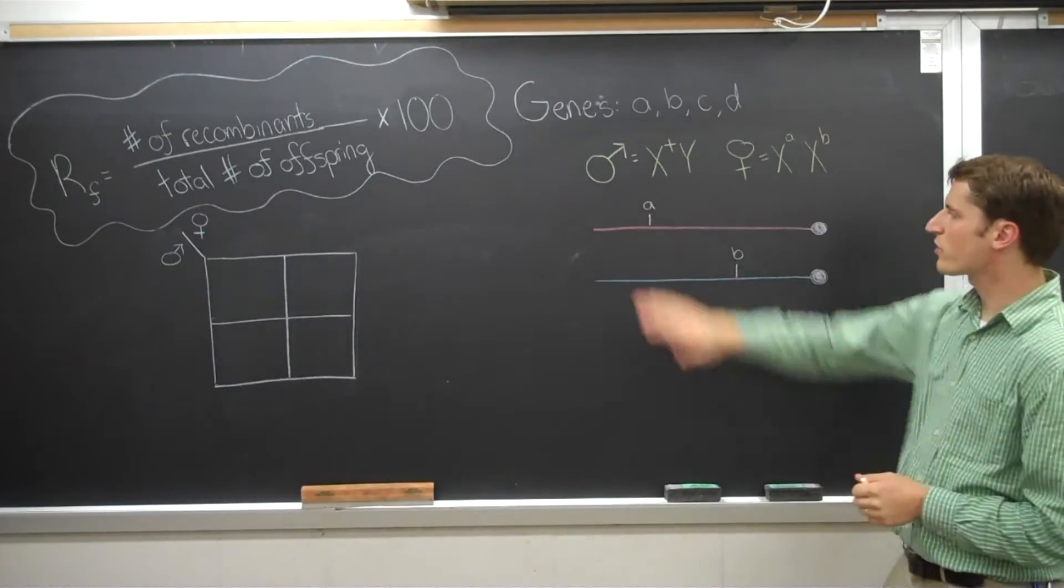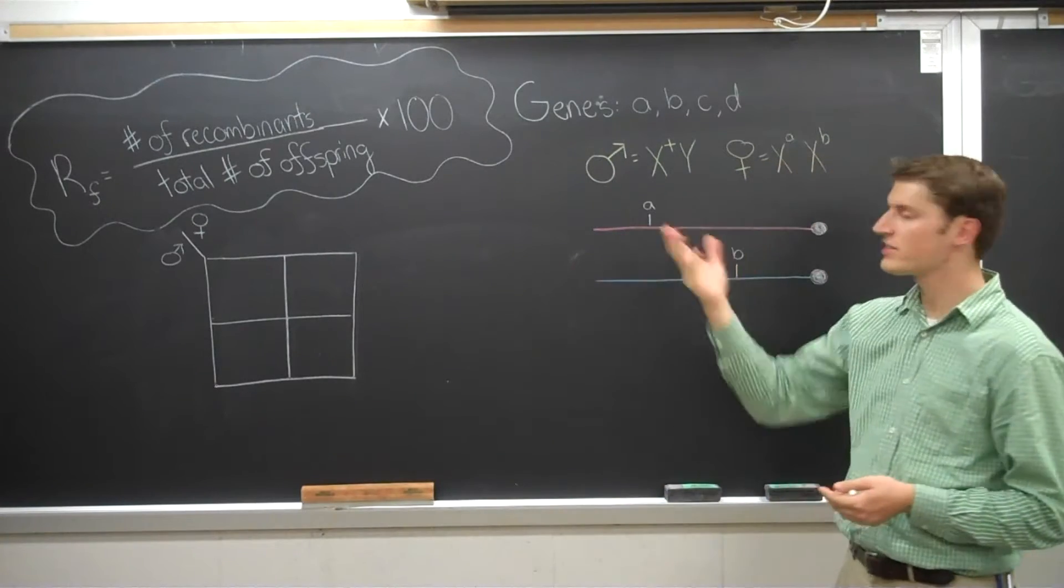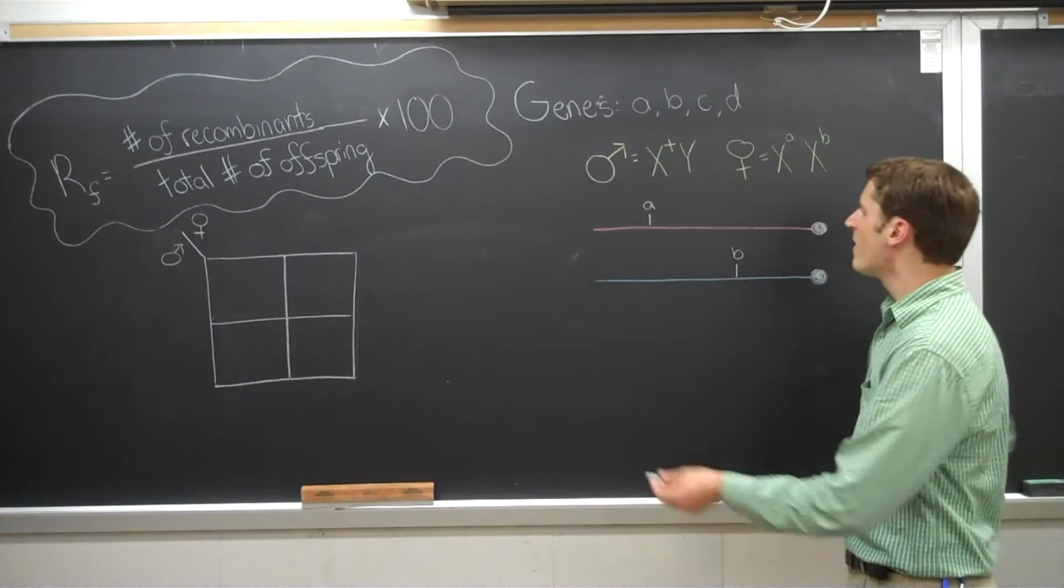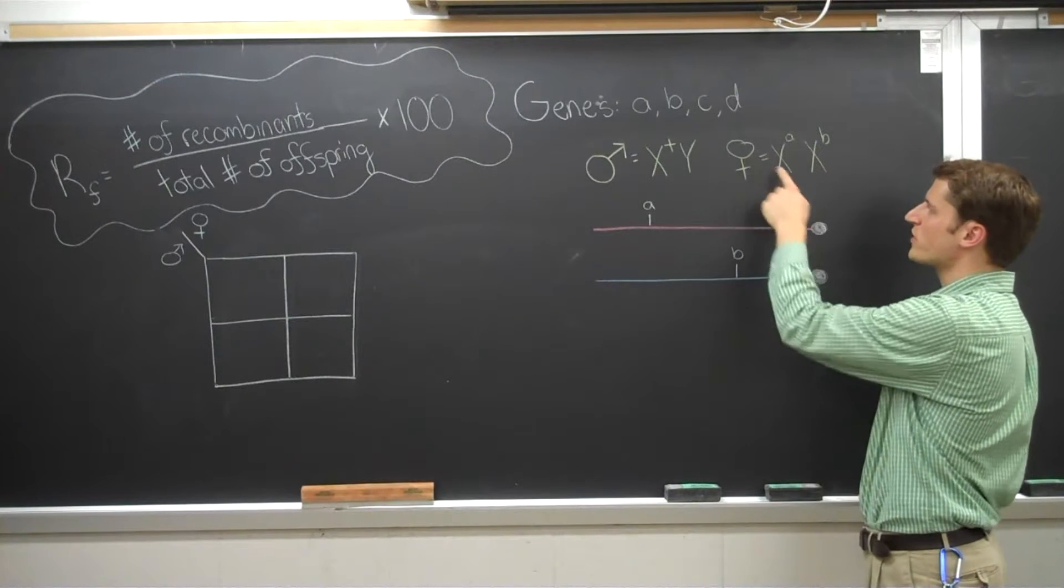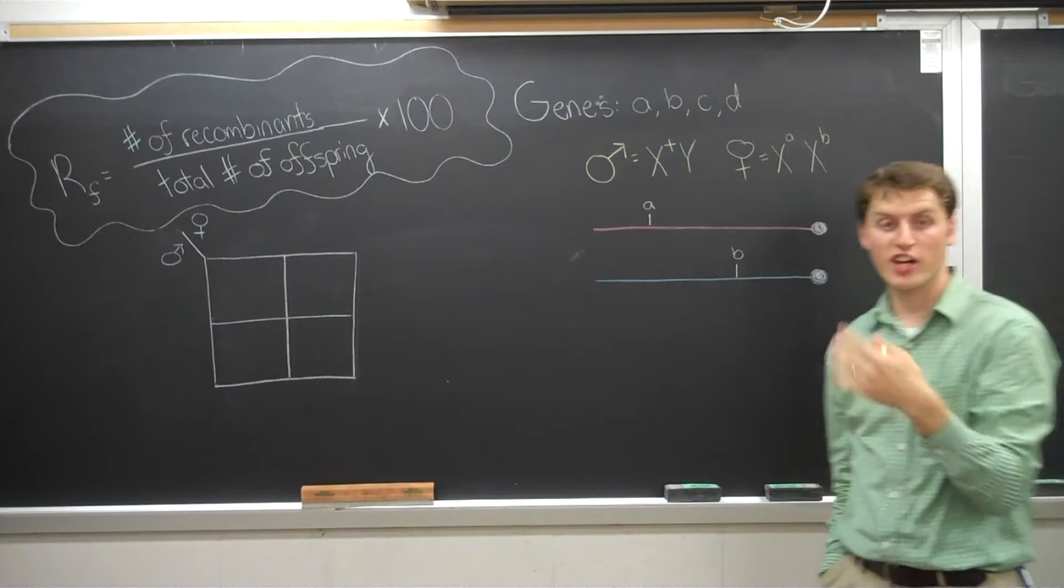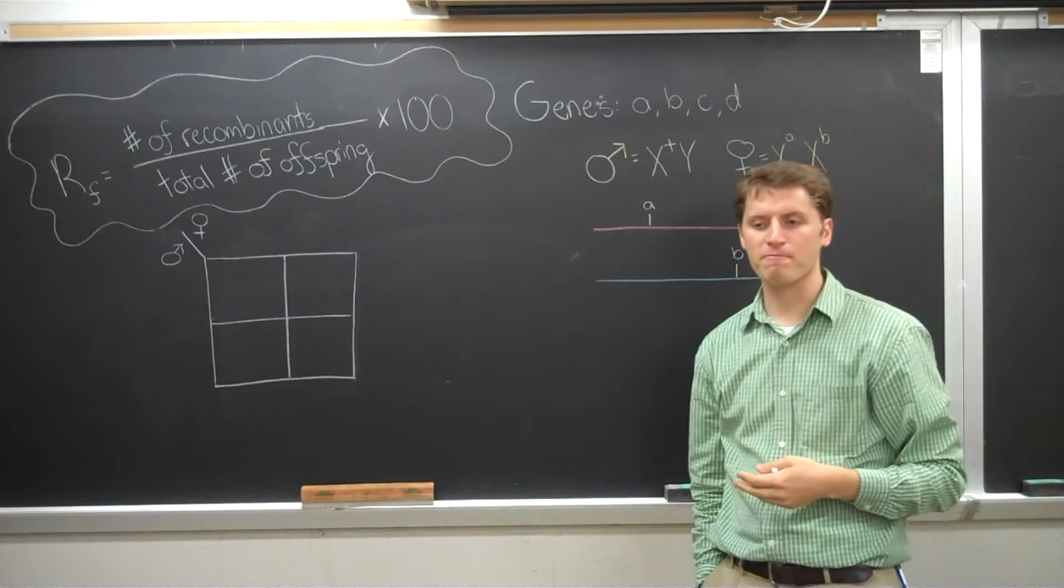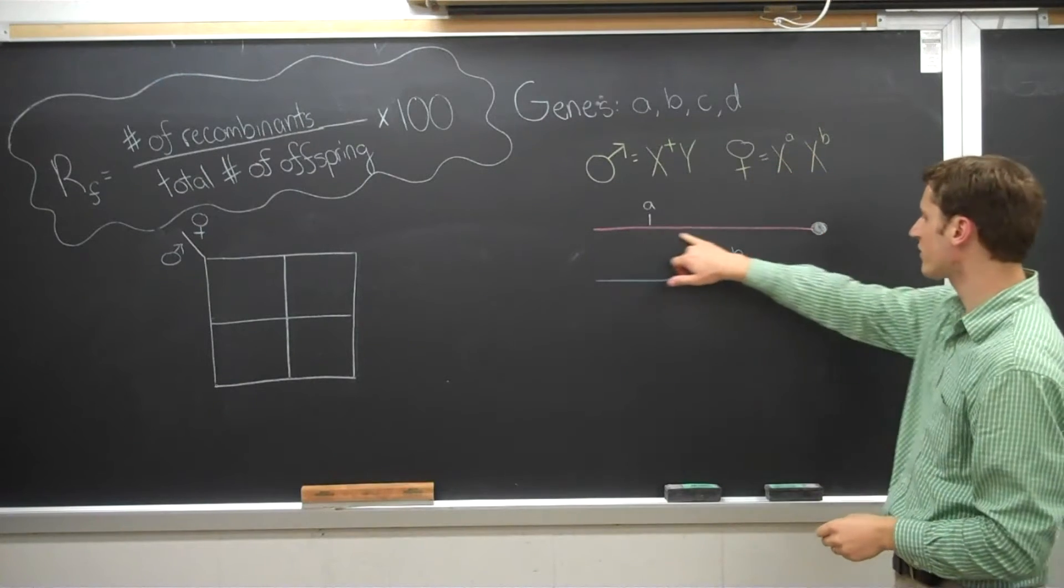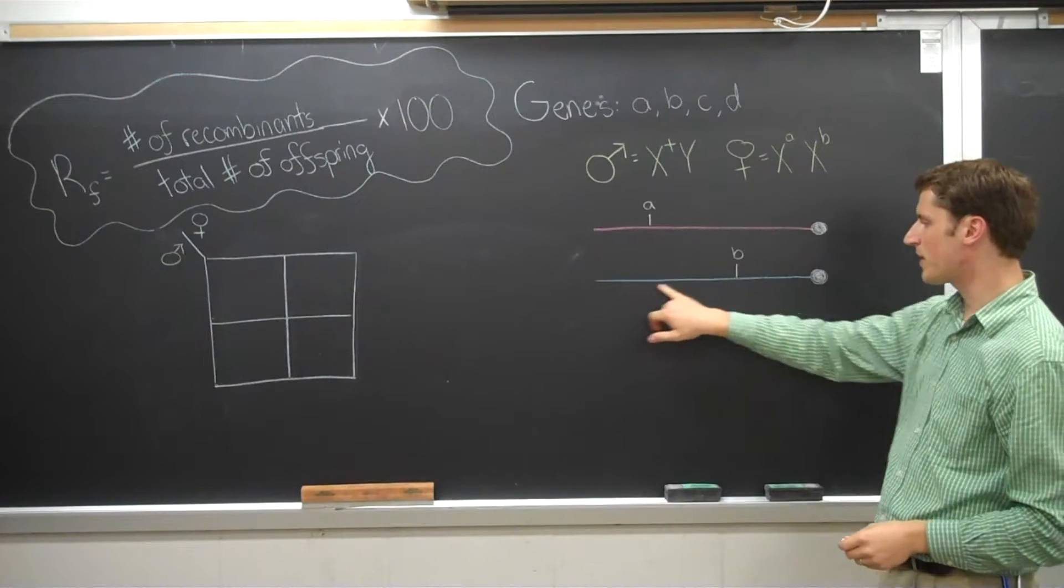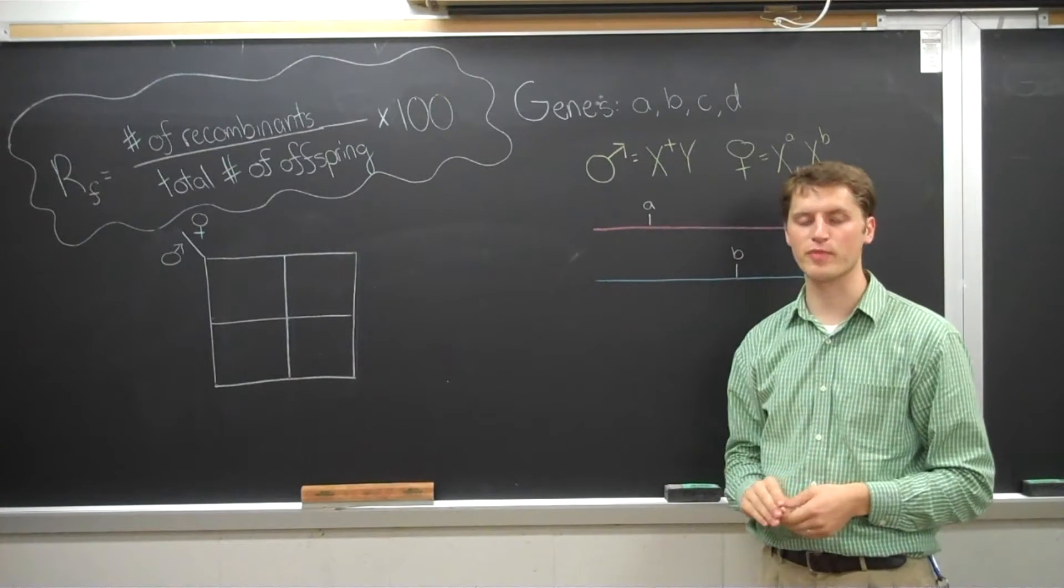So let's talk about what is the number of recombinant versus the total number of offspring. Here's a hypothetical cross. We're going to be working with four hypothetical genes, A, B, C, and D. In this cross, I'm going to take a female, which is XA, XA. So she has her two X chromosomes. Each one of them is carrying one mutant. One of them has mutant A, as seen here. One of them has mutant B, as seen here. So she's heterozygous for both of these respective mutations.